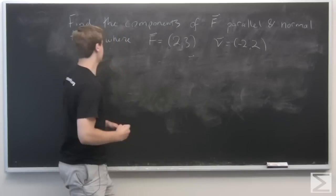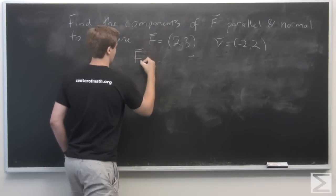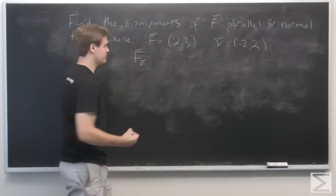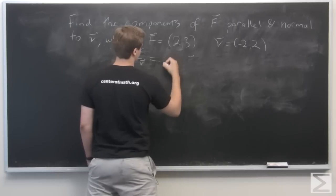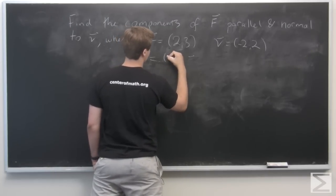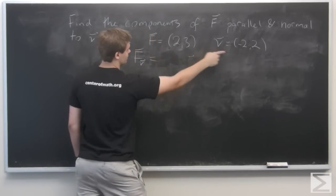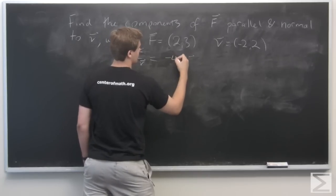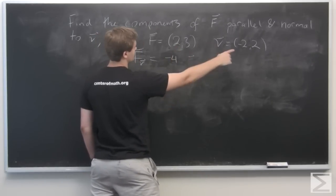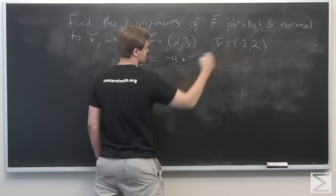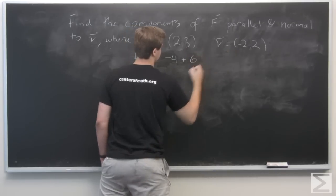Cool, so we have this formula now. And we calculate. So let's first do f·v. So this is just going to be, we don't have to write it all out, it's going to be -4, which is 2 times -2, plus 3 times 2, which is going to be 6.